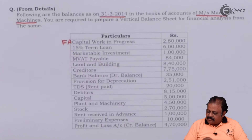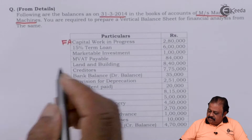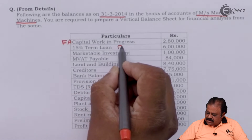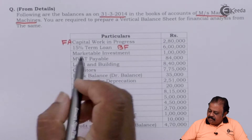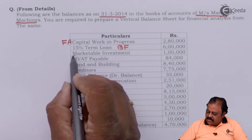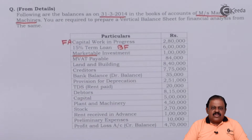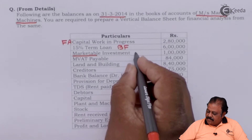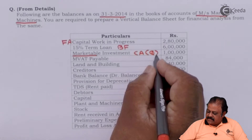15% term loan is an item of borrowed fund; usually they are secured against the assets of the business. Marketable investments — the word 'marketable' indicates these are short-term investments, so they will be part of current assets, specifically quick current assets.